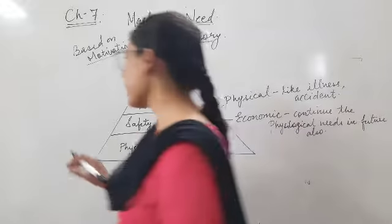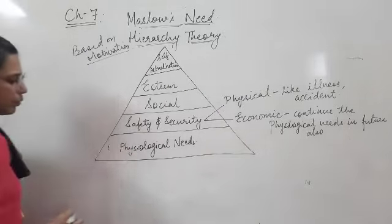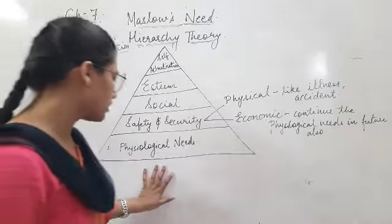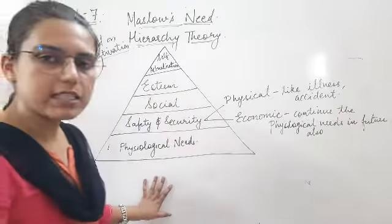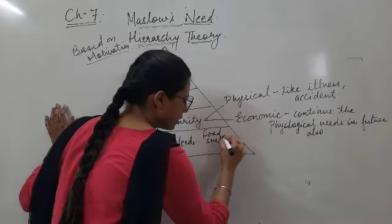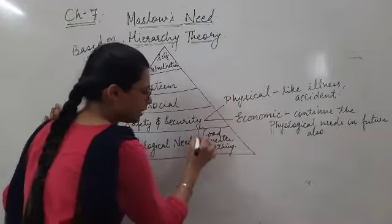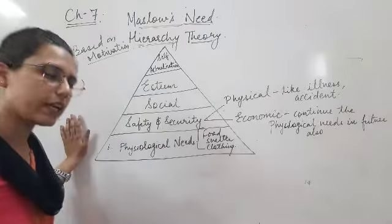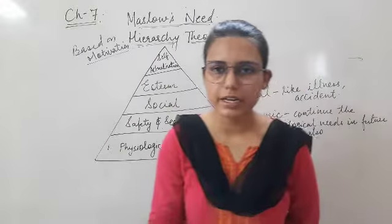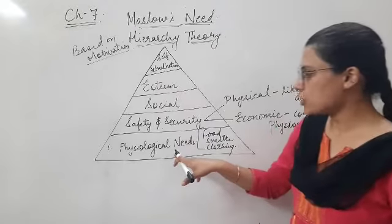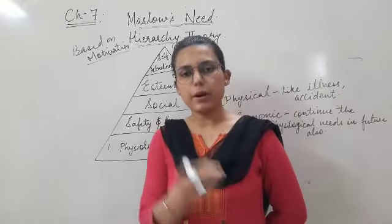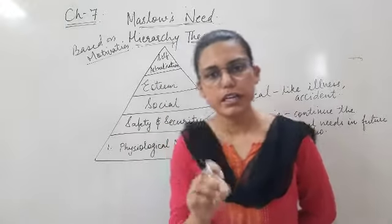The first level in the hierarchy is physiological needs. What are the physiological needs? Your employee wants the three basic needs fulfilled, which are food, shelter, and clothing. When these three basic needs are fulfilled in the organization, this is your first goal.